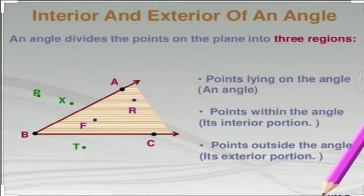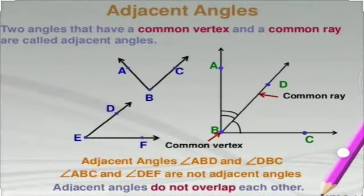Now let's move to the next topic: adjacent angles. For adjacent angles, we need three things — a common ray, a common vertex, and different interiors. If these three things are present in a pair of angles, then those angles are adjacent. For example, angle ABC and angle DEF are not adjacent angles because we cannot find a common arm, common vertex, or different interiors.